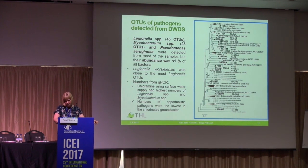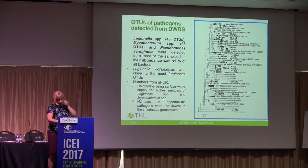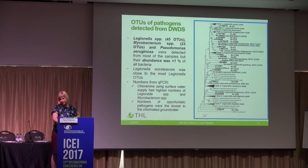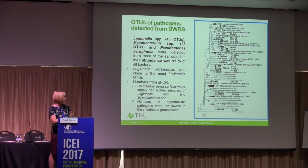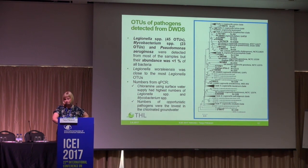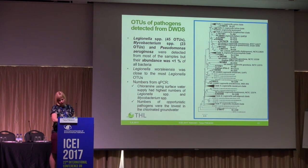In addition to the total bacterial community structure, we looked at specific pathogens in these water systems. We found Legionella, Mycobacterium, and Pseudomonas sequences, but their abundance was less than 1% of all bacteria. Closer phylogenetic analysis of the Legionella sequences revealed that most were non-pathogenic. Since next-generation sequencing is not truly quantitative, we confirmed the numbers by qPCR and found that opportunistic pathogen numbers were lowest in chlorinated groundwater supply.